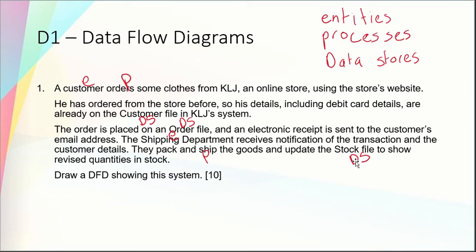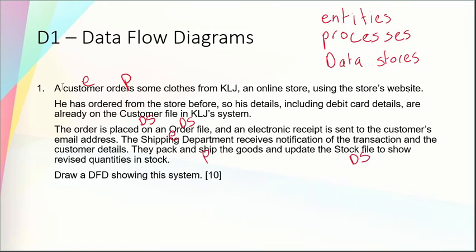There are seven parts to this data flow diagram based on what I've highlighted from the question — and that's a really good starting point. So if I go to a blank canvas here, going back to the question, that first line says the customer orders some clothes from KLJ, an online store, using the store's website. In here I've got the first entity which is the customer, and I've got the first process which is the ordering of the clothes.